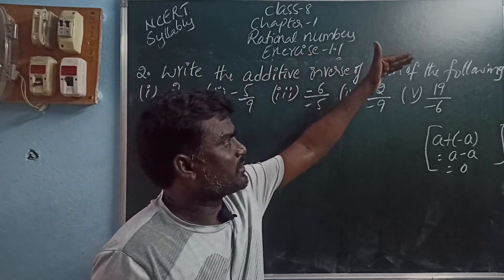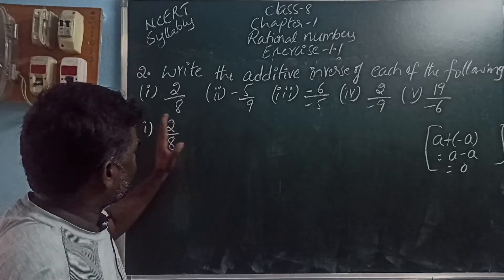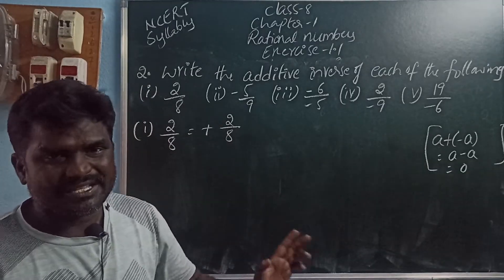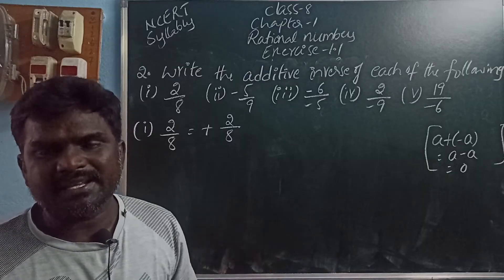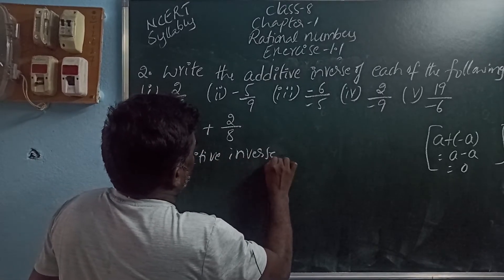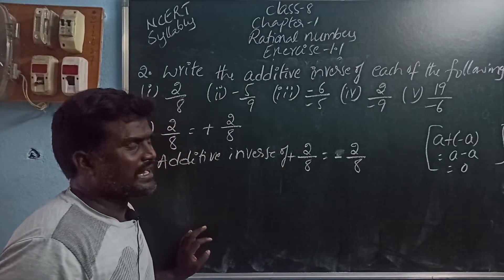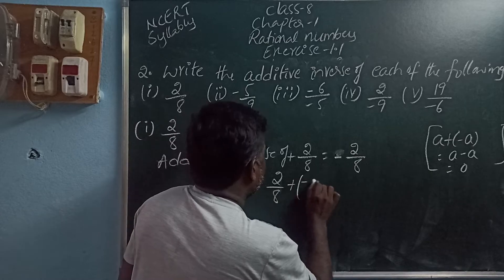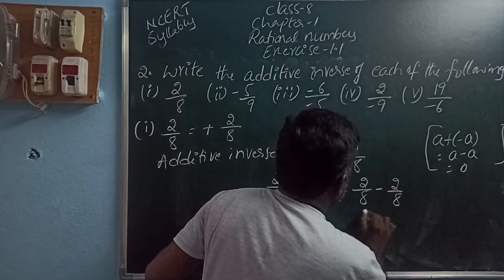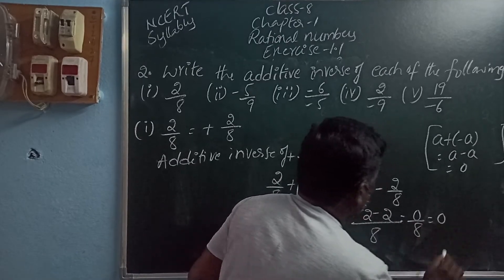What they are asking: write the additive inverse of each of the following. First one: 2 by 8. There is no sign for this number, so it is plus 2 by 8. The additive inverse of a positive number is negative. So the additive inverse of 2 by 8 is minus 2 by 8. When adding these two: 2 by 8 plus minus 2 by 8 gives plus into minus, which is minus 2 by 8 minus 2 by 8. These two are like fractions. Write the common denominator, add the numerators: 2 minus 2 is 0. 0 by 8 is 0.